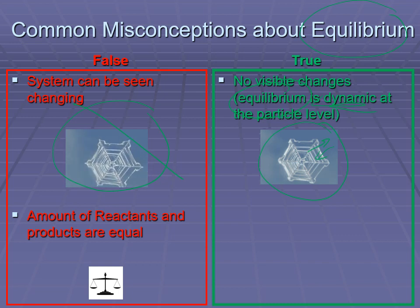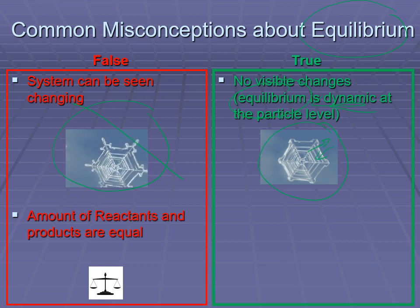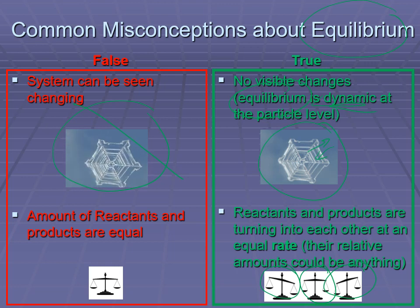The big misconception is that at equilibrium, the reactants and products are equal to each other. That is not impossible, but the range of values for the ratio of product to reactant is essentially any positive number. You could have almost no products produced, or a whole bunch of products, or somewhere near the middle where they're roughly equal, or a whole bunch of reactants left over with very few products. All that equilibrium means is that the rate at which they are changing into each other is equal — it says nothing about how much of each you have.